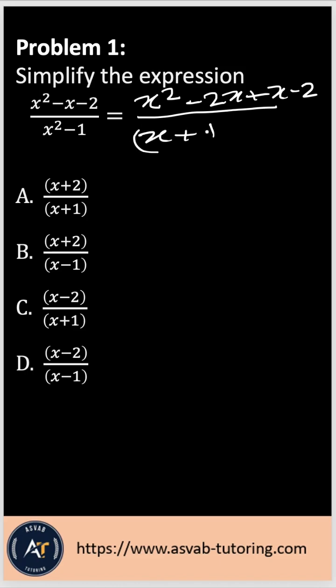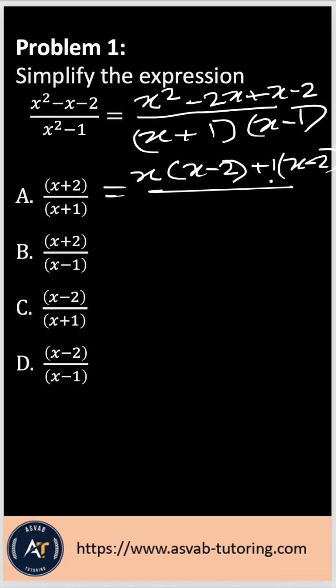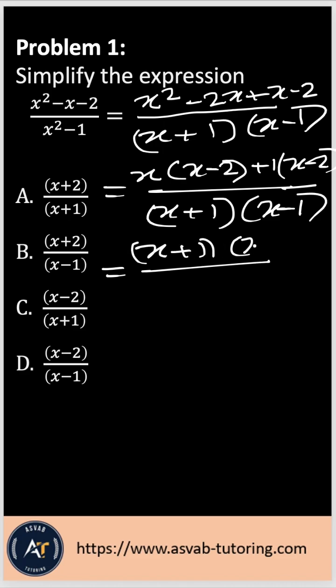Now if you take common in here, x gives you x minus 2, and then plus 1 common gives you x minus 2. The bottom you have the same thing, x plus 1 times x minus 1. So now what you have here is x plus 1 times x minus 2, and the bottom you have x plus 1 times x minus 1.